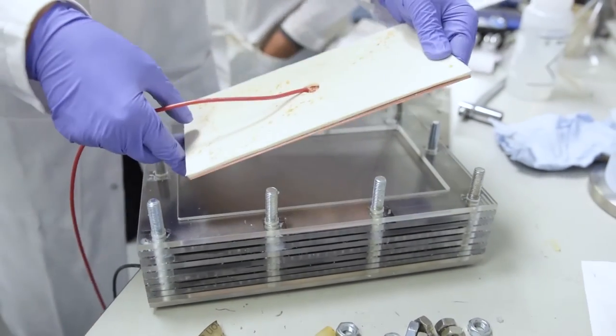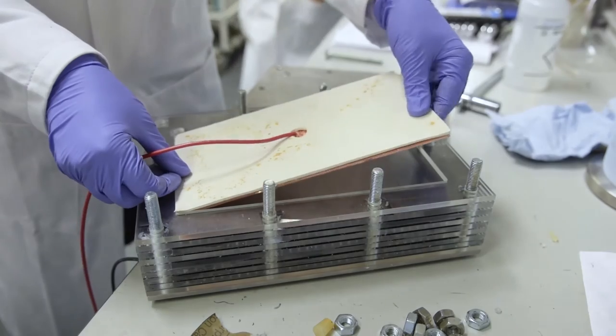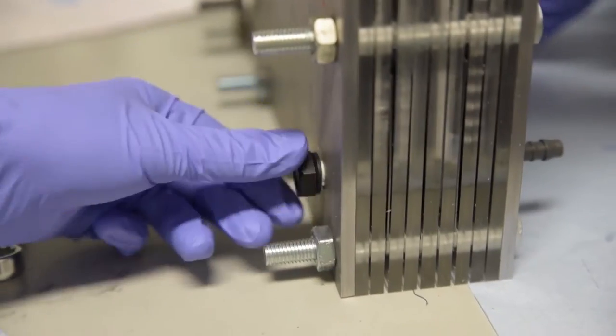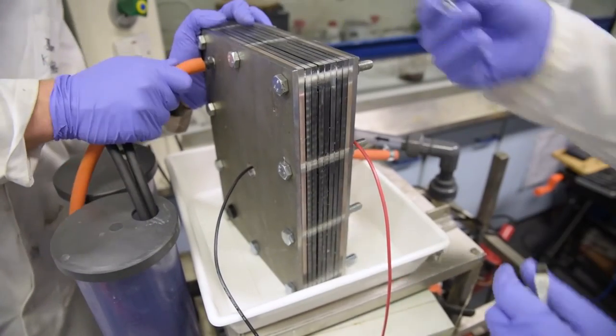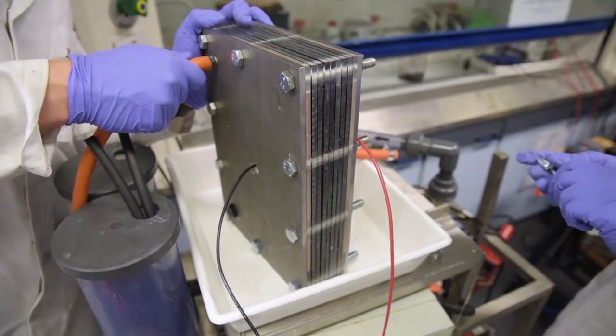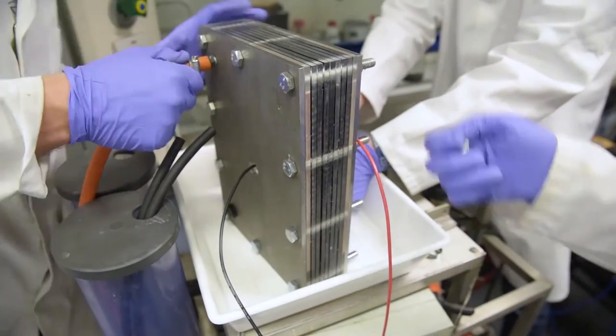After fitting the positive current collector together with the other endplate, it is now time to create a flow path by inserting a blanking plug and a spigot, through which a spiral wrap is run. The tubes are secured onto each spigot by using jubilee clips.